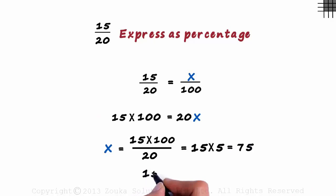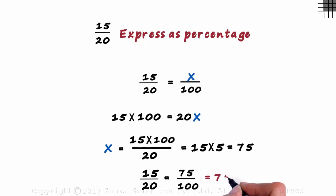Hence 15 by 20 is 75 by 100, and that is equivalent to 75%. This was the concept of how we convert it into percentage form. But notice what we did. All we did was multiply the fraction by 100.